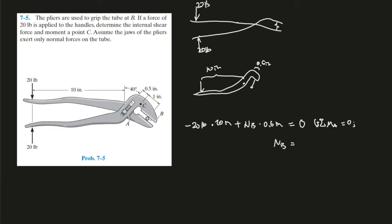They already give us the distance, so we can write it down: normal force at B times 0.6 inches that should give us 0 for the sum of the moments at A equals 0. Going this way is positive. And solve for NB, plug everything into your calculator, NB should give you 133.3 pounds.